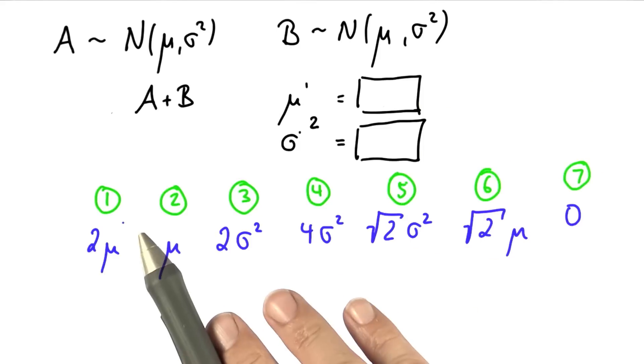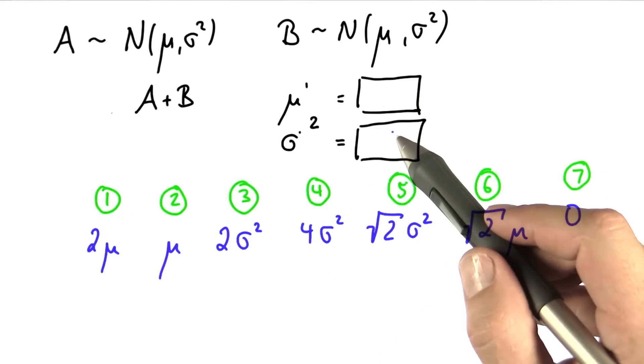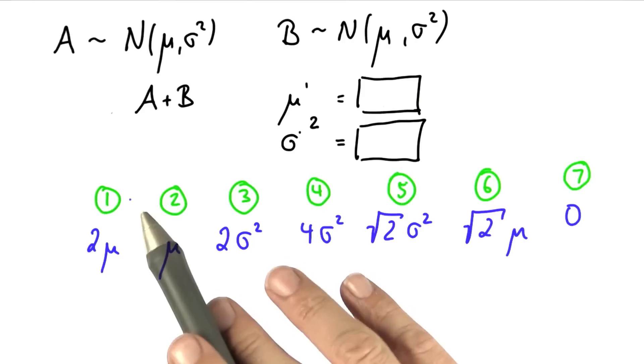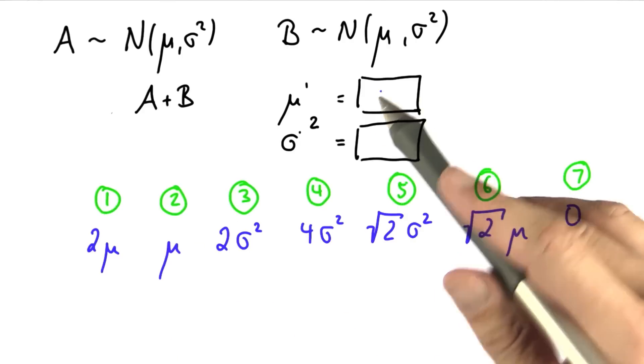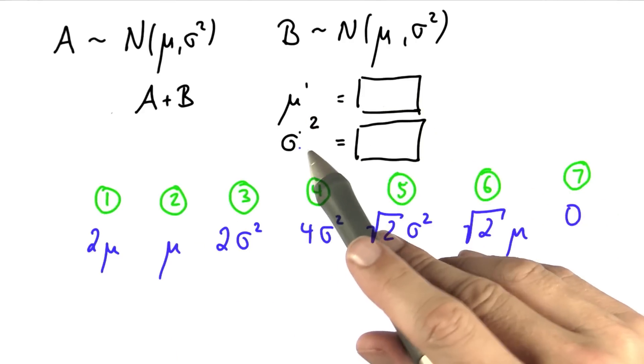Please put your green number into these fields over here. So this will be a number between 1 and 7, and it indicates that the corresponding term is the correct answer for mu prime and sigma prime squared.